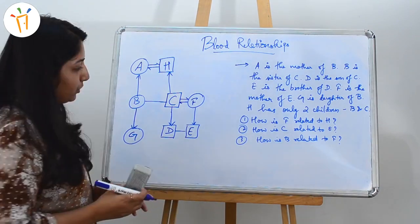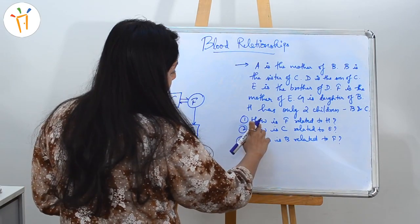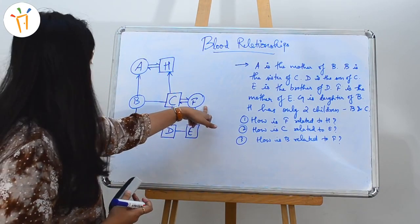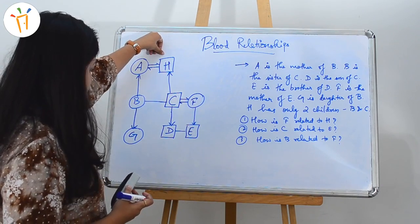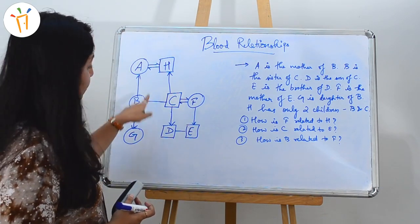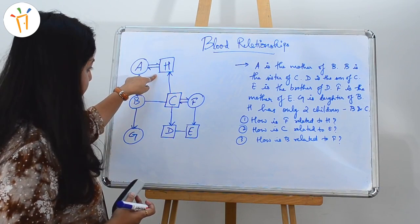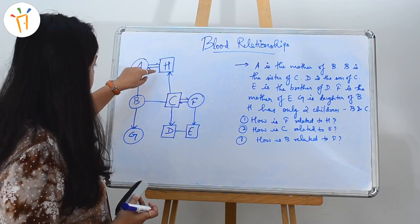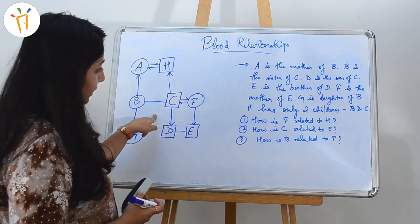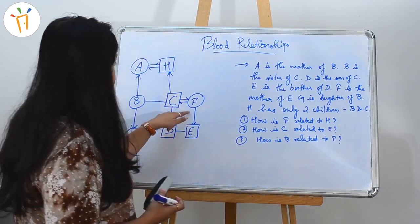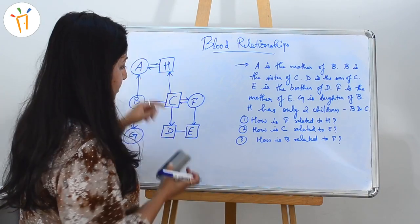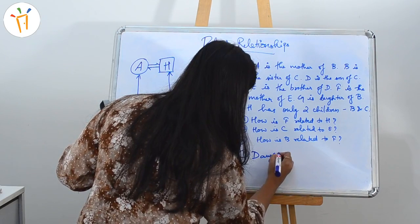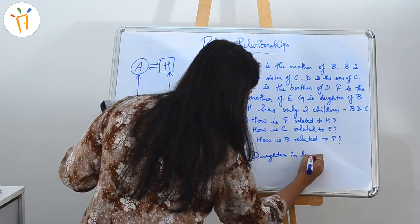Let's move on to our questions. The first question is: how is F related to H? Where is F? F is here. And where is H? H is here. Since B and C are kids of H, and C is the son, H is the father, and F is the wife of C — F will be the daughter-in-law of H. So the answer is daughter-in-law.